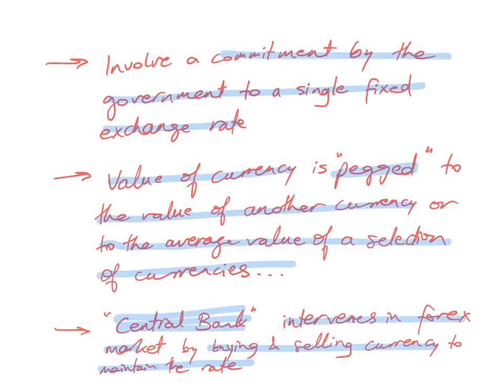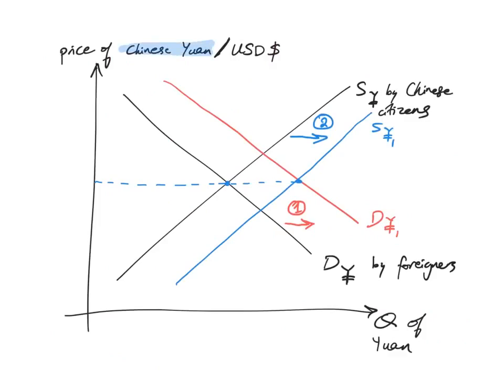Say for example we're looking at the market for the Chinese yuan. On the y-axis we have the price against the US dollar and on the x-axis we have the quantity of the Chinese yuan. There's the demand for the yuan by foreigners. Remember the demand for a country's currency comes from foreigners who want to buy goods and services from that country, invest or save in that country, or travel to that country. And there's the supply by the citizens.